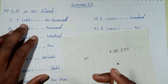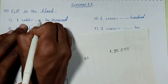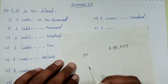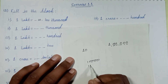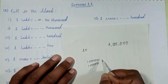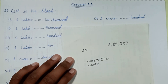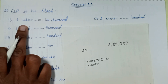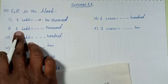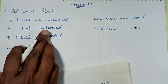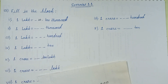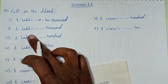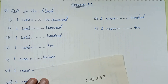Ten times ten thousand multiplied with ten equals one lakh. Second question: one lakh equals blank thousand. How many thousands are equal to one lakh? Let's solve this problem.